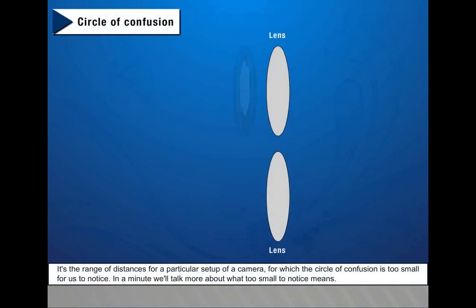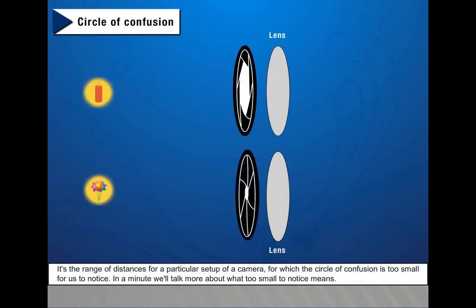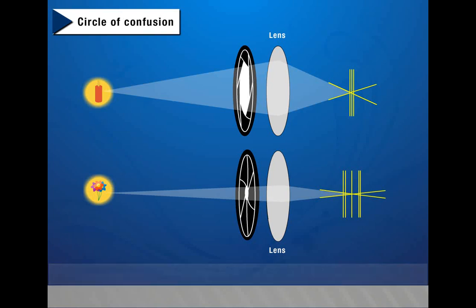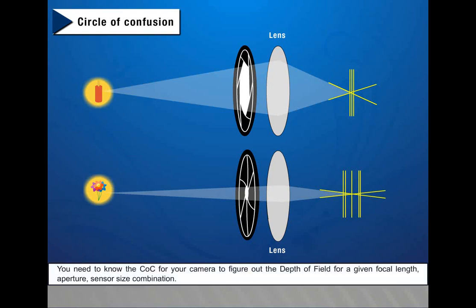It's the range of distances for a particular setup of a camera for which the circle of confusion is too small for us to notice. In a minute, we will talk more about what 'too small to notice' means. You need to know the COC for your camera to figure out the depth of field for a given focal length, aperture, and sensor size combination.